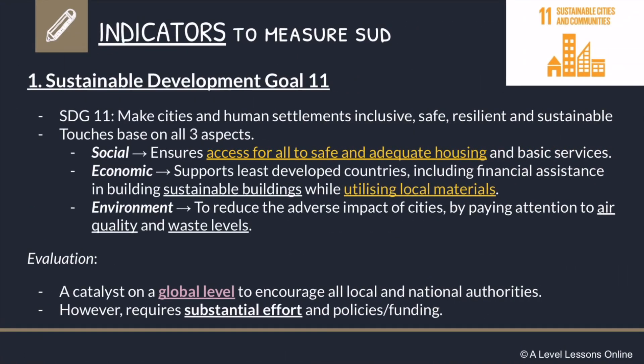We're going to go into the actual indicators now. The first indicator is SDG 11 — Sustainable Development Goal 11. This was coined in 2015 when governments all across the world came together to transform what was originally the Millennium Development Goals into the Sustainable Development Goals. One of them that falls under urban development is SDG 11, which aims to make cities and human settlements inclusive, safe, resilient, and sustainable for basically everyone — covering socially and environmentally sustainable aspects.